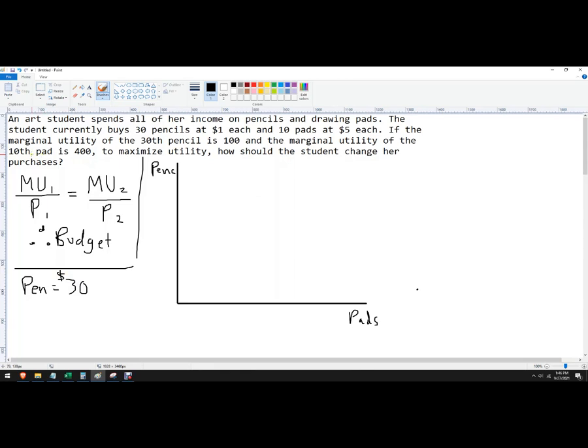And then they're buying 10 pads. So in pads, the price of pads is $5. So they're spending five times 10 is 50. So their whole budget is $80.